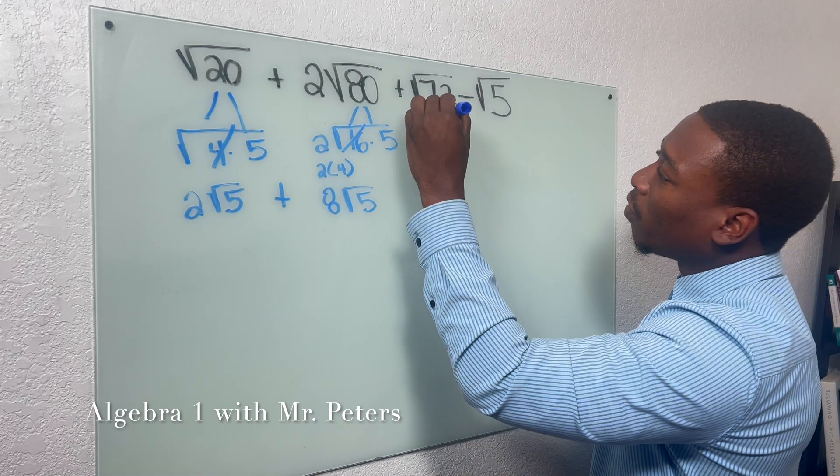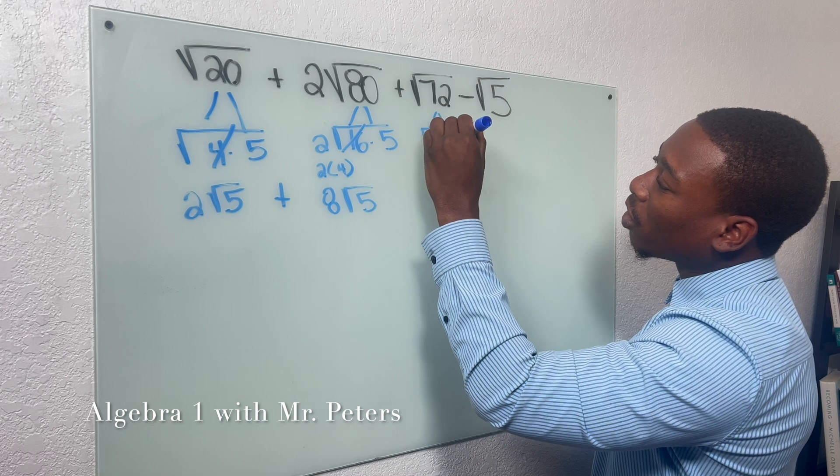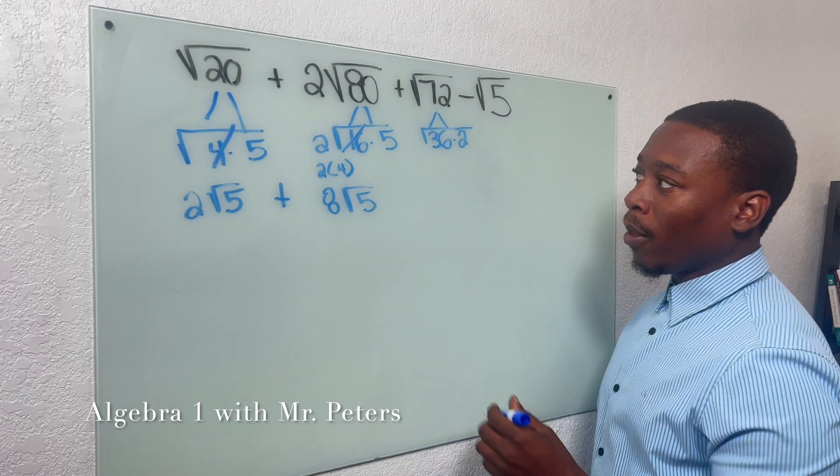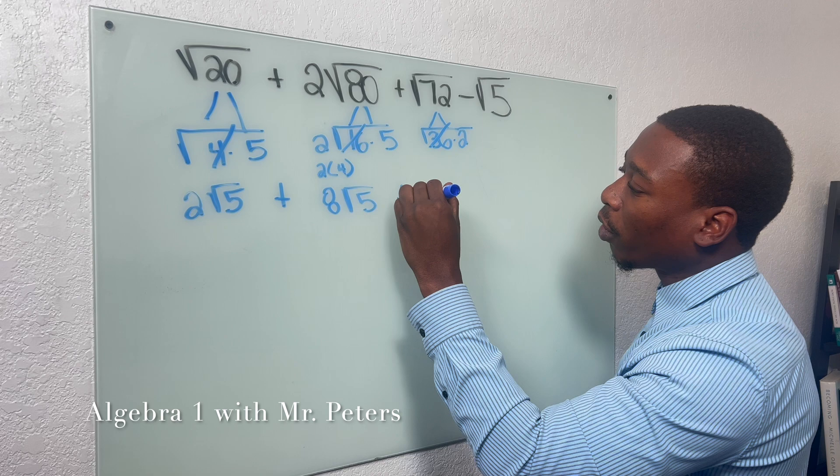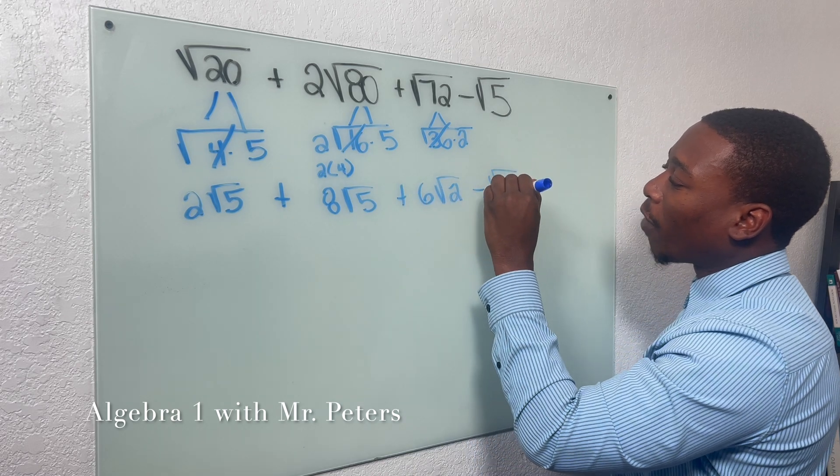Third radical now, number 72, radical 72, we could break down as 36 times 2. Like 36 is our perfect square, 6 radical 2, and then we just bring down radical 5.